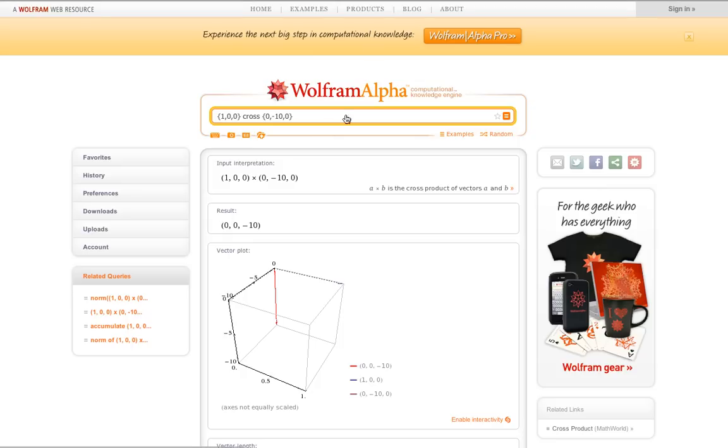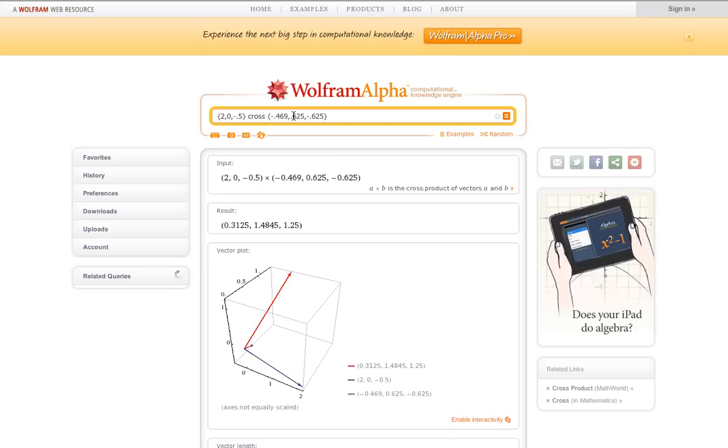And this constant T, I can factor out of the cross product. So the moment generated by the cable about A will be T times the cross product of this vector and this vector. So let's go to alpha and see what we've got here. R_AB is (2, 0, -0.5) and lambda hat BC is (-0.469, 0.625, -0.625). And that gives me this cross product: 0.313, 1.485, and 1.25.